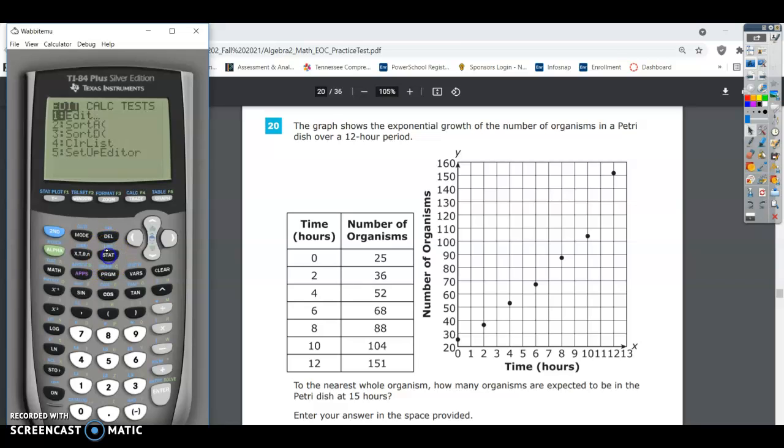All right. So then go back to STAT, go over to calculate. Since we assume this is going to be exponential, and we don't actually have to assume. If we go back up here, the graph shows the exponential growth. So we just need to locate exponential. It looks like 0 is exponential regression. It's going to pull from our list 1 and list 2. That's what we want. We're going to enter through this and ask it to calculate an equation.